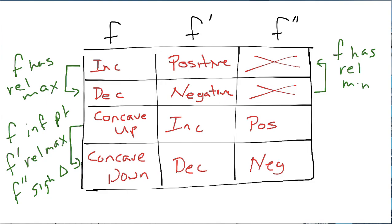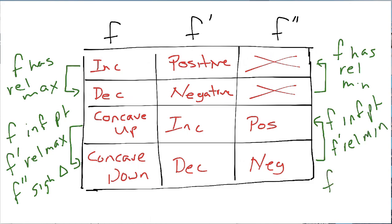So there are some added things. If you go from the fourth line to the third line, F still has an inflection point, F prime has a relative minimum, and F double prime has a sign change. We'll unpack it a little more in the next video.